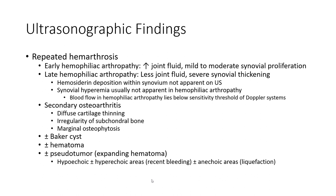With repeated hemarthrosis, early hemophilic arthropathy shows increased joint fluid and mild to moderate synovial proliferation. Late hemophilic arthropathy shows less joint fluid and severe synovial thickening. Secondary osteoarthritis features include calcified synovium, irregularity of subchondral bone, marginal osteophytosis, plus or minus bursitis, plus or minus hematoma, plus or minus pseudotumor.